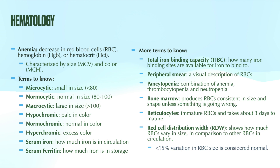The total iron binding capacity, or TIBC, tells you how many iron binding sites a person has available for iron to bind to. The TIBC is increased when iron is low, because there are more sites available for iron to bind to. A helpful memory aid: think of it like hotel vacancies — when iron is low, TIBC is high because there are more vacancies.